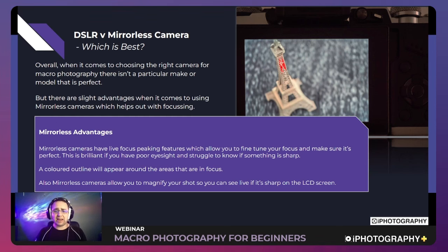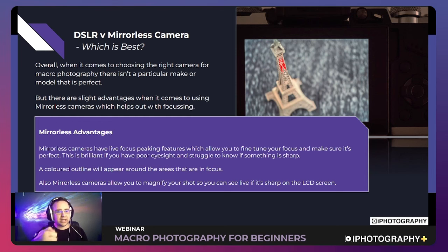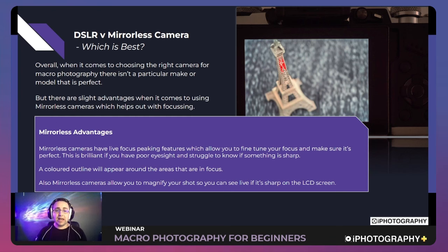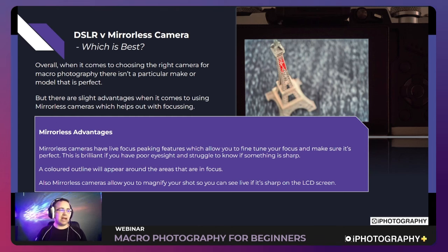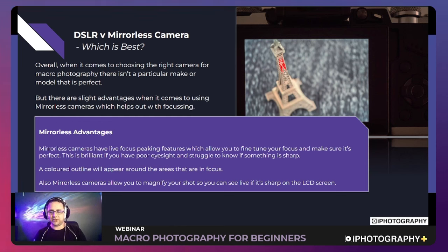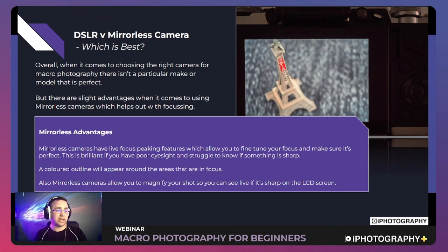Mirrorless cameras also sometimes offer the option to magnify your live view — you can zoom in on the screen to get in tighter and then use focus peaking to make sure focus is absolutely perfect. That's probably the main advantage mirrorless has, though some DSLRs — like the Nikon D850 — may also have these features, so please let me know if yours does.